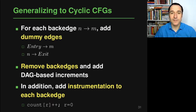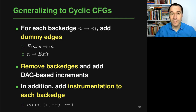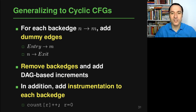The algorithm we saw in the second video was only defined for directed acyclic graphs. Of course, real control flow graphs can have cycles because programs do have loops, or sometimes call a function recursively. Now we will generalize the algorithm to these arbitrary control flow graphs.